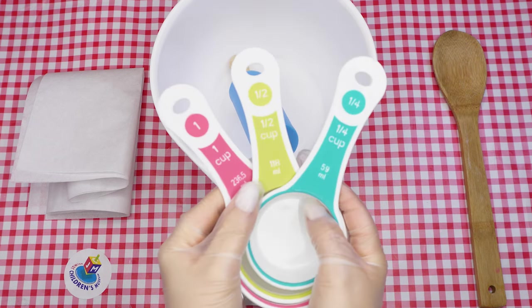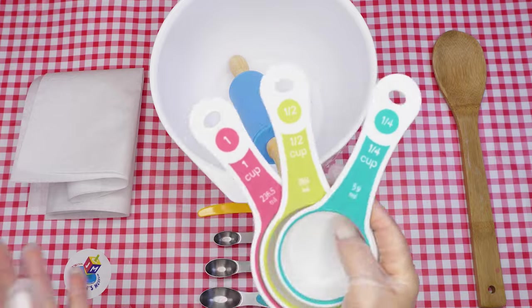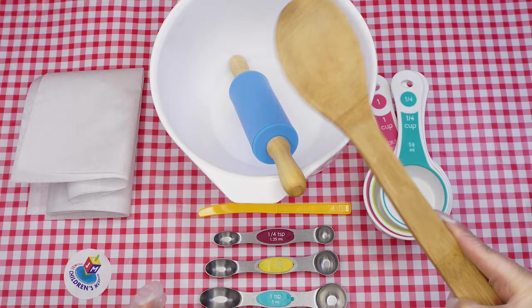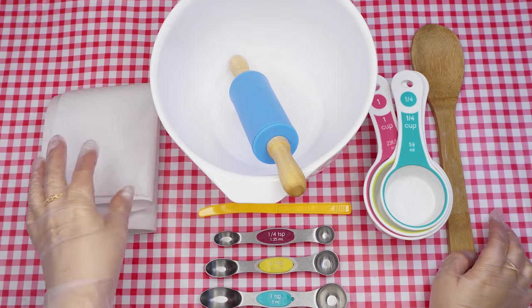We'll also need measuring cups - a cup, a half cup, and a quarter cup - a spoon for mixing, a few sheets of parchment paper, and lastly a baking sheet.